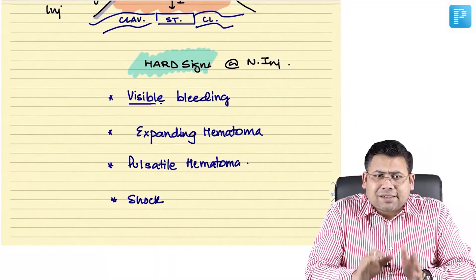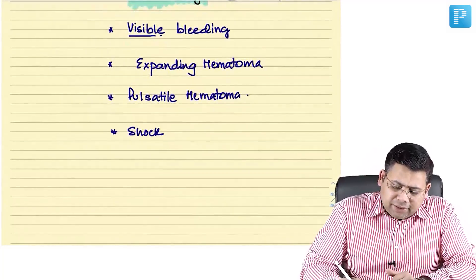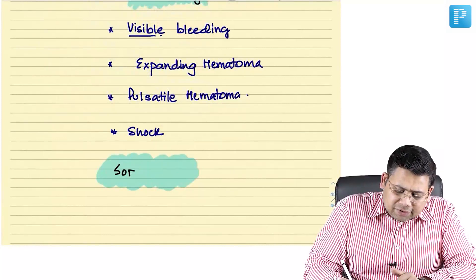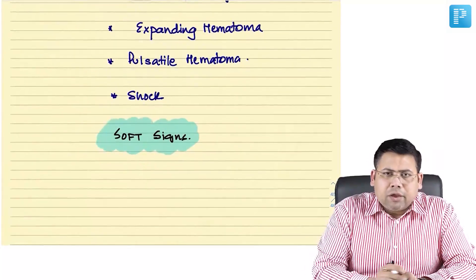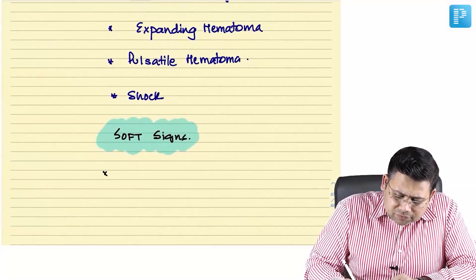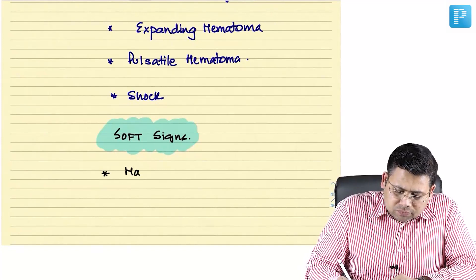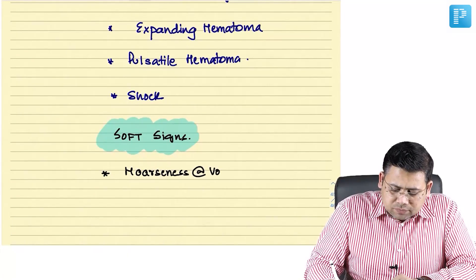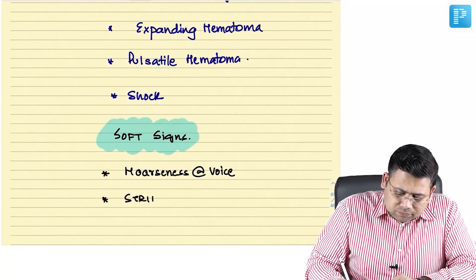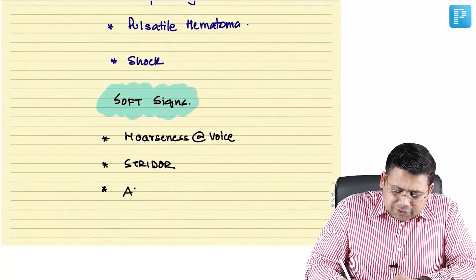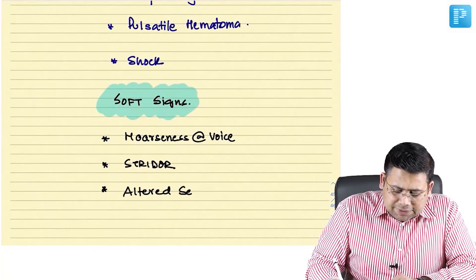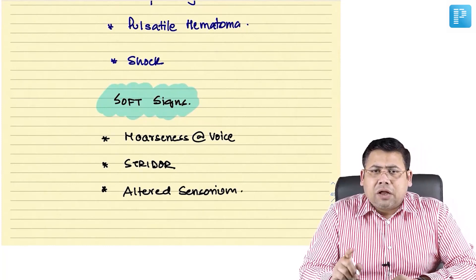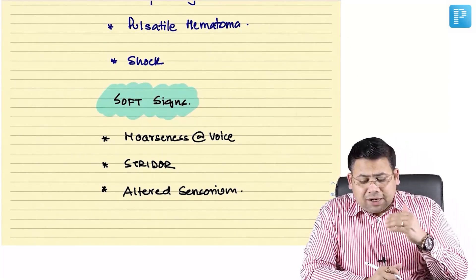Soft signs indirectly indicate vascular injury. Soft signs include hoarseness of voice, stridor, and altered sensorium. These are indirect indicators of ongoing vascular trauma or something serious.